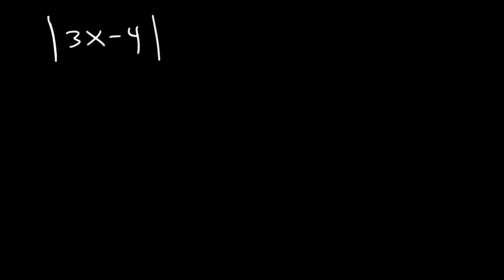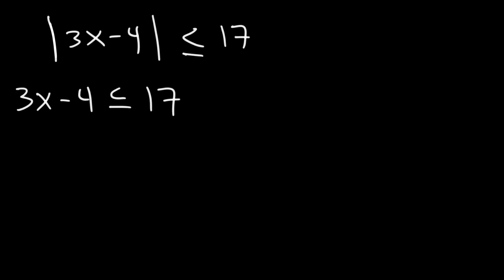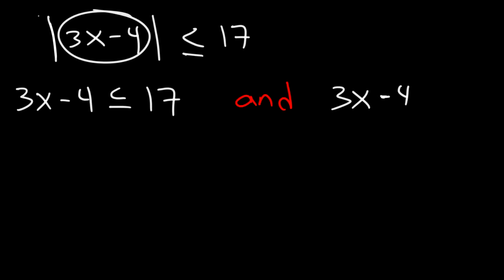Now let's try another problem: the absolute value of 3x minus 4, less than or equal to 17. We write two inequalities. The first looks exactly like the original without the absolute value symbol. Because it's less than, we're going to use 'and' instead of 'or'. For the second inequality, we rewrite what's inside the absolute value, change the inequality direction, and change 17 to negative 17.